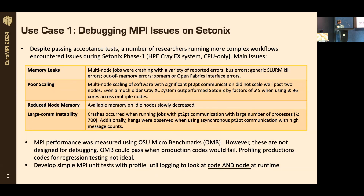We also had reduced node memory - a big puzzle. We'd come back to nodes and sometimes they'd have less available memory. Initially it was assumed that people were filling up /tmp - nodes have some node memory that can be used as a filesystem - but that wasn't the case.